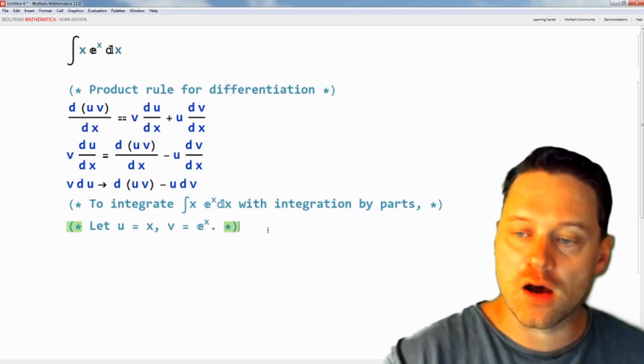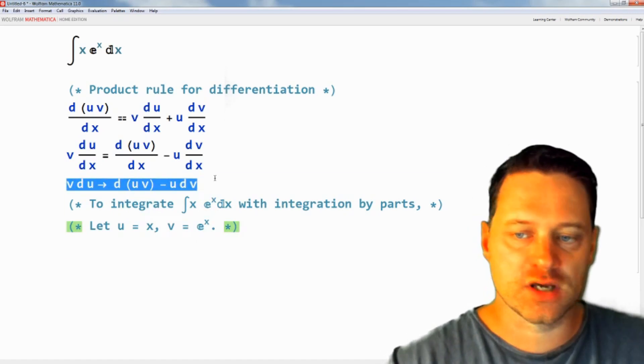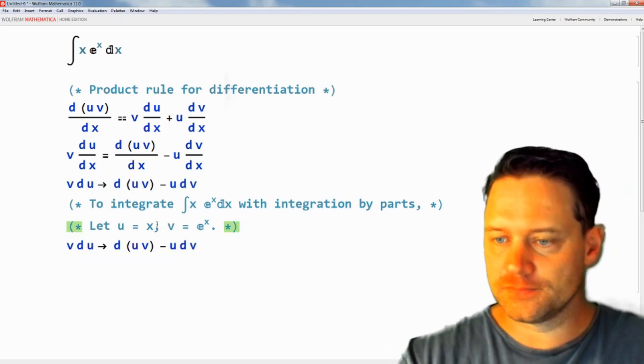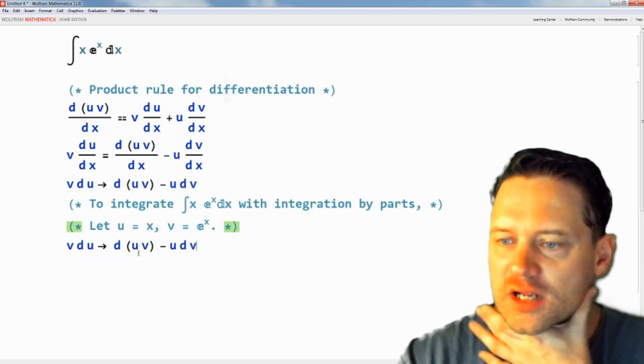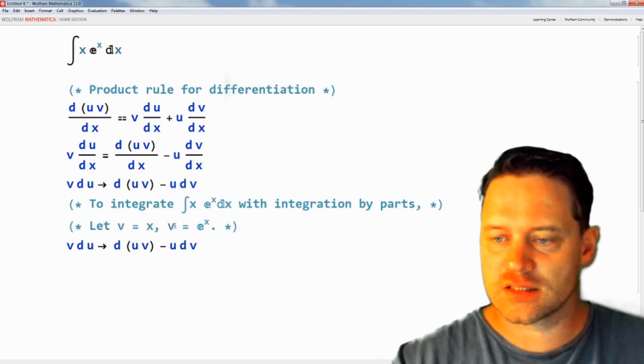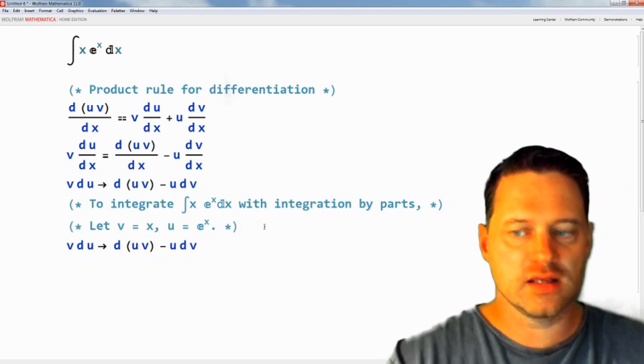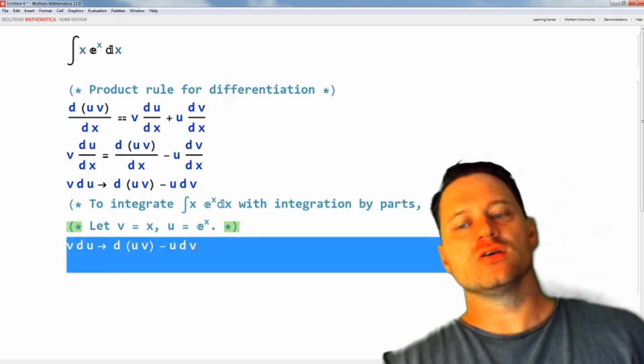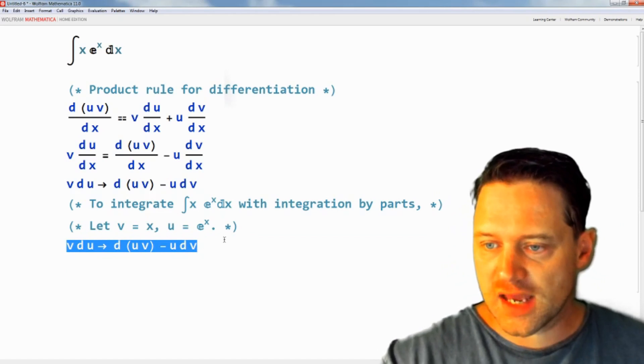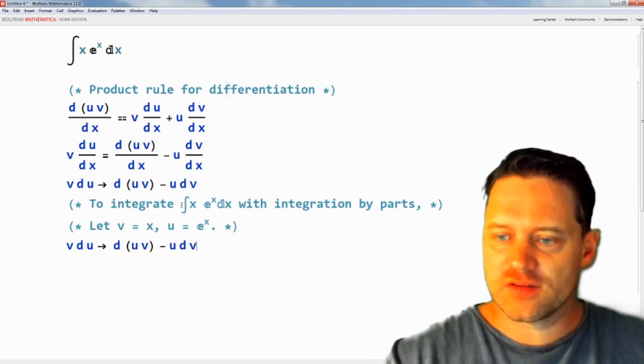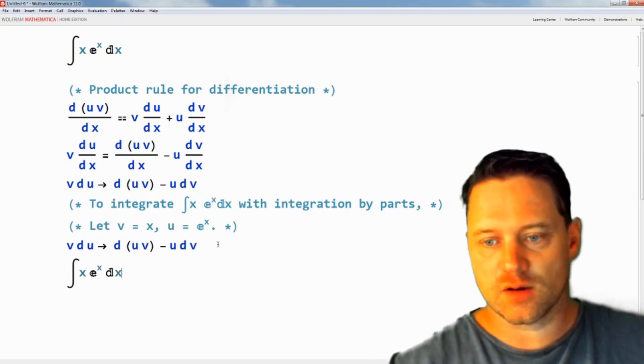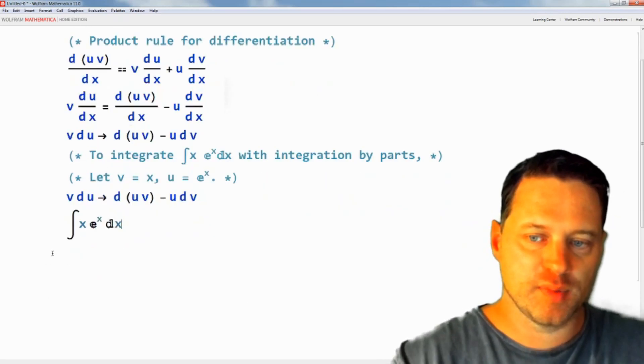Actually, let's do this the other way around. We'll call v equal to x and u equal to e to the x, and then we don't have to do any further rearranging with this formula. It just works.